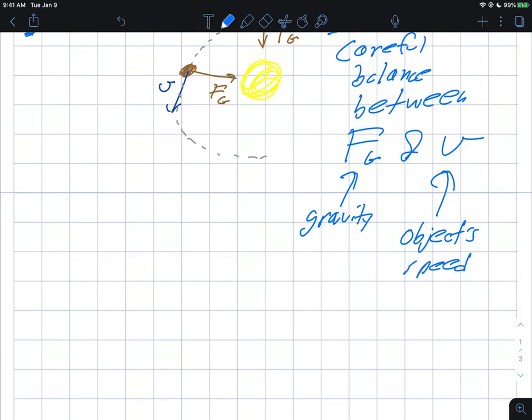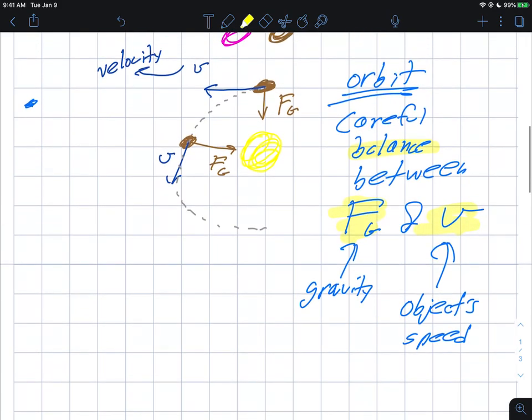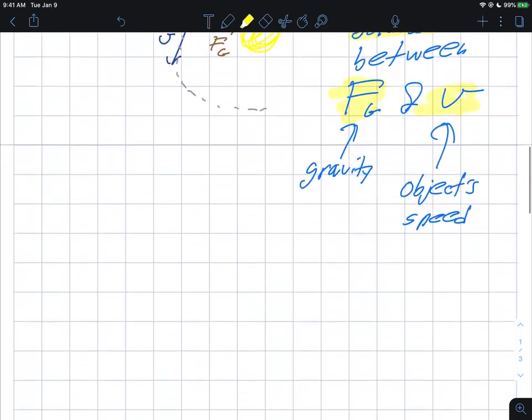And as we'll find in the simulations I'm about to show you here, if you get just the right balance between gravity and the object's speed, you can actually achieve an orbit. If you don't, you won't, but if you do, you do. And that's the law of gravity that we need to understand the structure of the solar system.